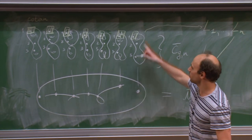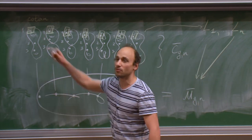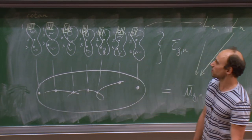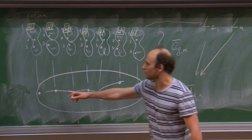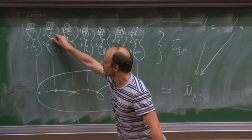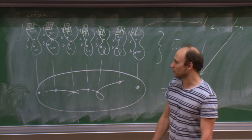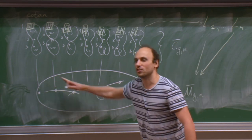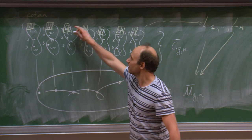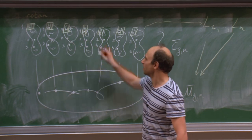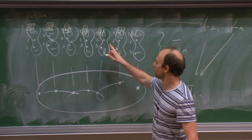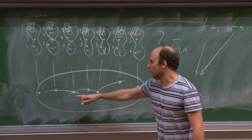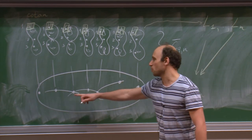If you take a point at random, it's going to be a smooth Riemann surface. But then there is a divisor with normal crossings, and points of this divisor correspond to curves with self-intersections. When you have a point on the intersection of this divisor, you have two nodes. This is called the boundary.